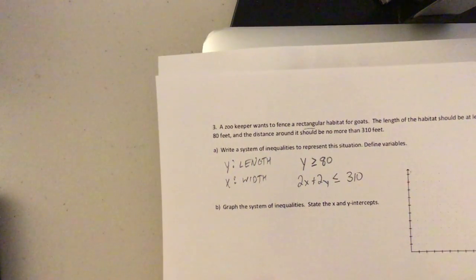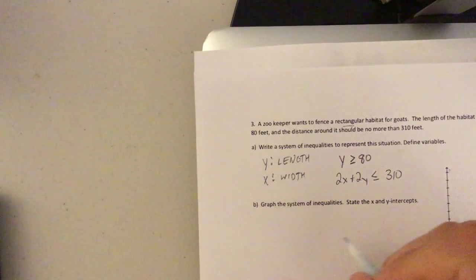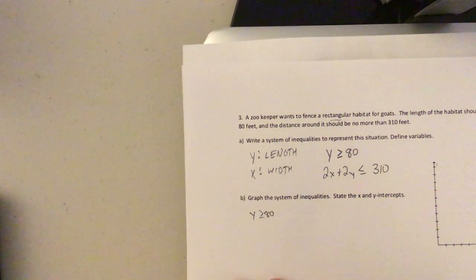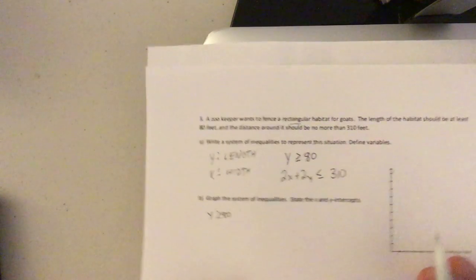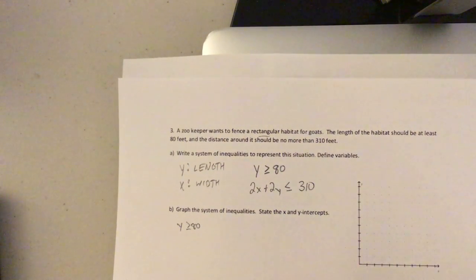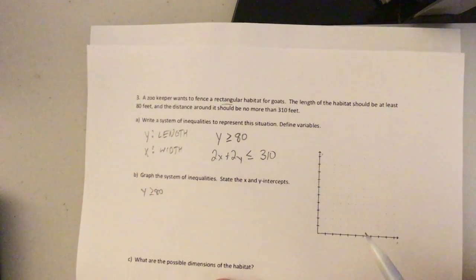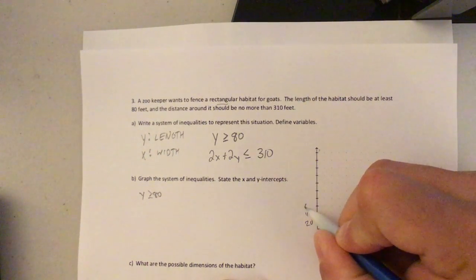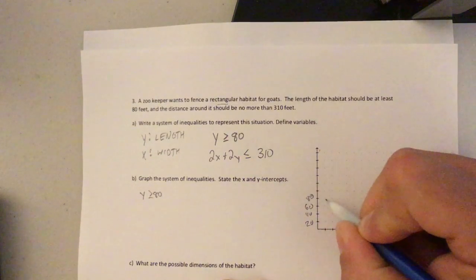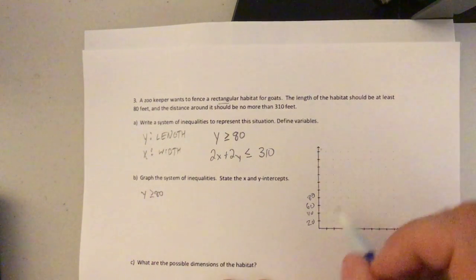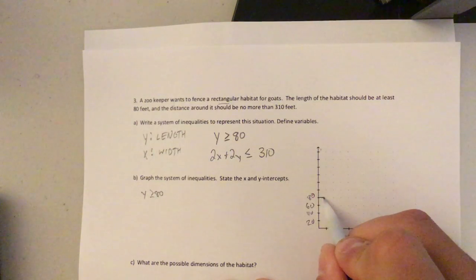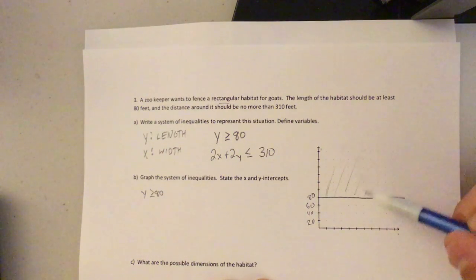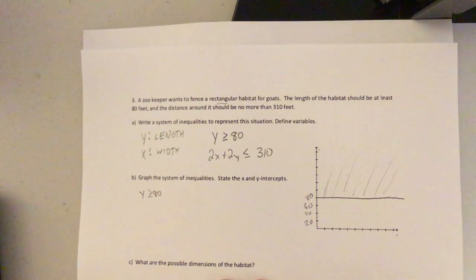Okay. Graph the system of inequalities, state the X and Y intercepts. The nice thing is Y is greater than or equal to 80, that's good to go. Okay. If you're saying, well, Mr. Hur, how could we do that? You could have any line that's above Y is 80. So I'm going to actually go up by 20s. You might say, Mr., why are you going up by 20s? Because it just fits a little better on our graph. So that means when we graph this, it's a solid line and anything above that is greater than Y equals 80.